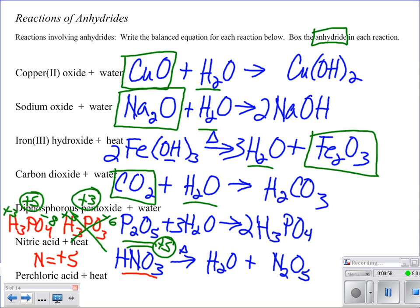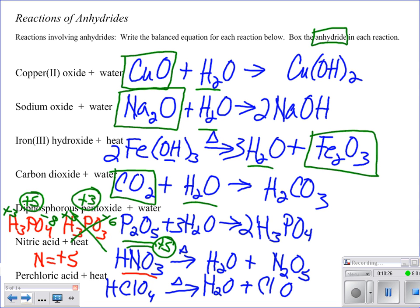Finally, perchloric acid, HClO₄ — perchlorate is ClO₄⁻. We decompose it into water and a chlorine-oxygen compound. Stare at the perchloric acid and figure out the charge of chlorine. We come up with +7, giving us Cl₂O₇.